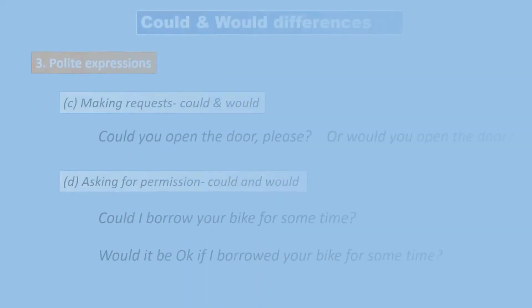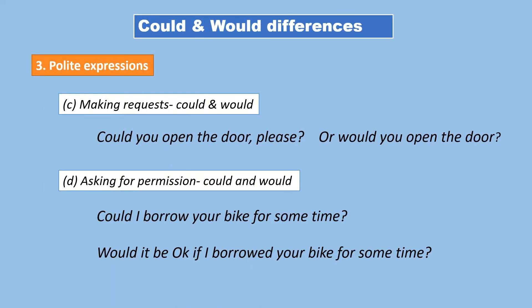When making requests, we can use both 'could' and 'would.' For example: 'Could you open the door, please?' or 'Would you open the door?' — both are acceptable. Similarly, when asking permission, we can use both. For example: 'Could I borrow your bike for some time?' or 'Would it be okay if I borrowed your bike for some time?' So for requests and permissions, both 'could' and 'would' can be used.